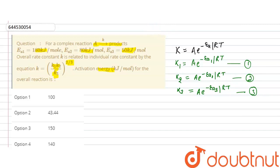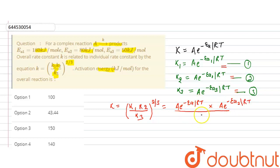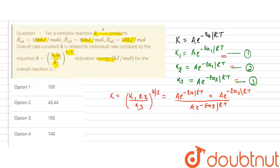Now, to calculate the activation energy of the overall reaction, we have been given that the overall rate constant is k = (k1 · k2 / k3)^(2/3). Instead of k1, k2, and k3, we substitute the values from the Arrhenius equation. So we can write: k = (A · e^(−Ea1/RT) · A · e^(−Ea2/RT)) / (A · e^(−Ea3/RT)), all raised to the power 2/3.